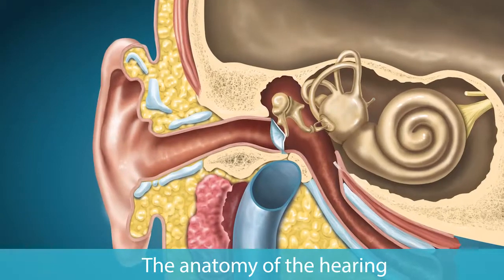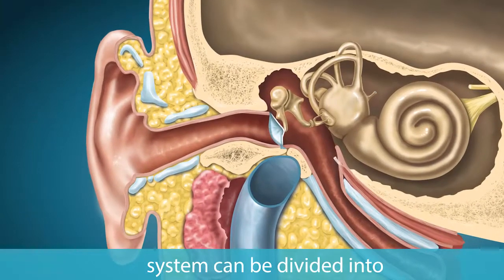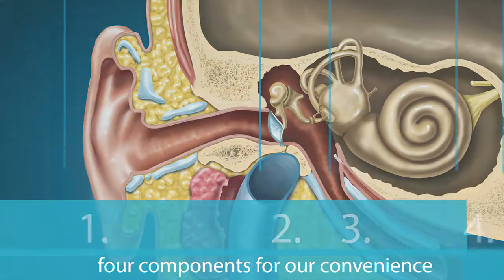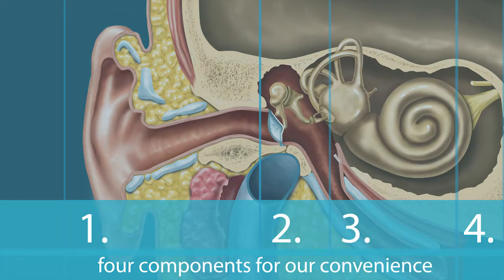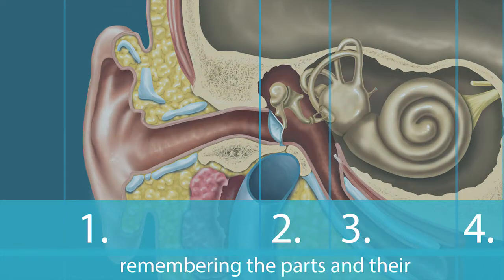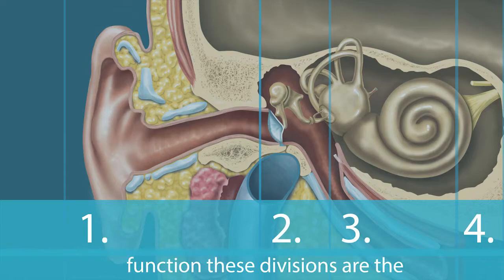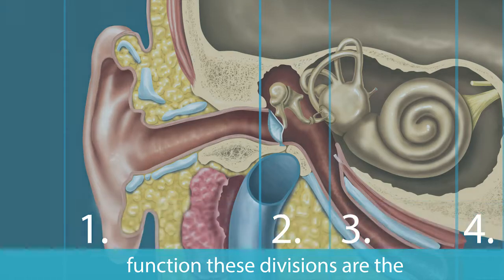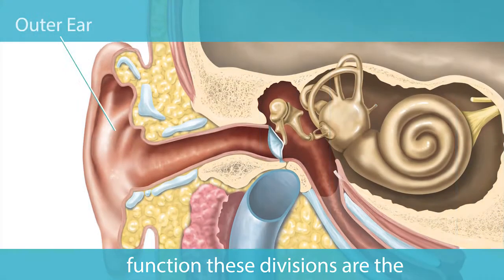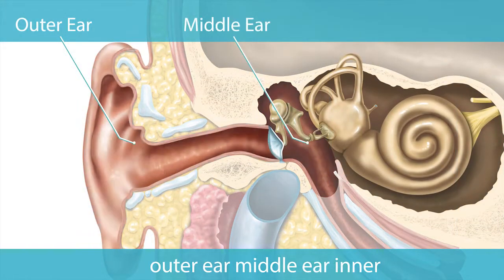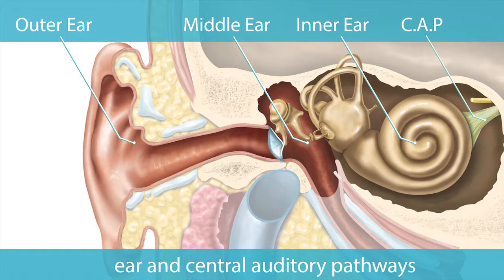The anatomy of the hearing system can be divided into four components for our convenience in remembering the parts and their function. These divisions are the outer ear, middle ear, inner ear, and central auditory pathways.